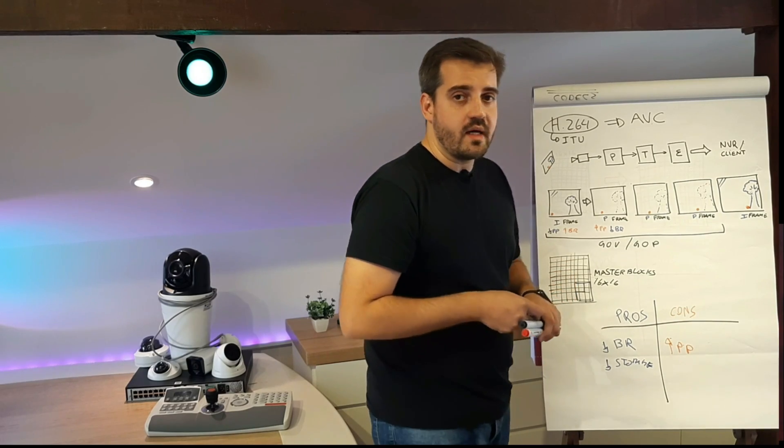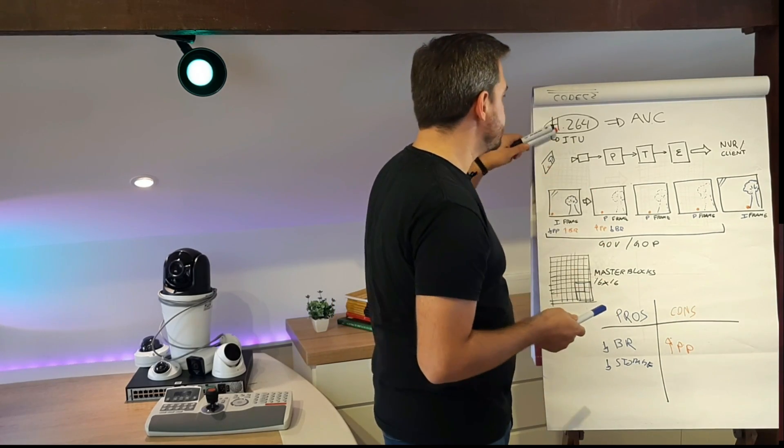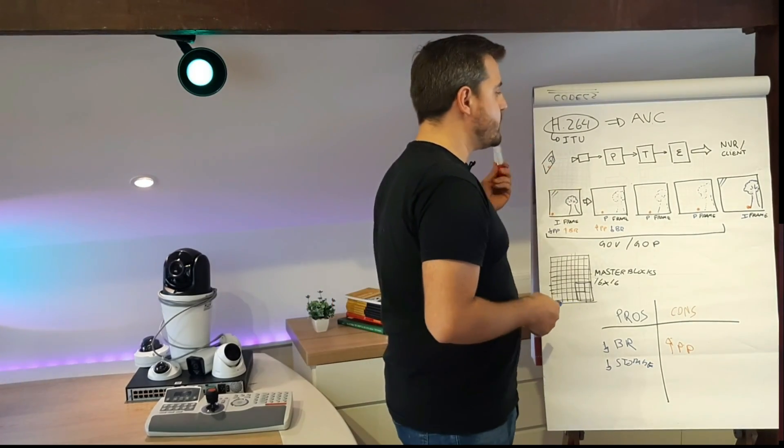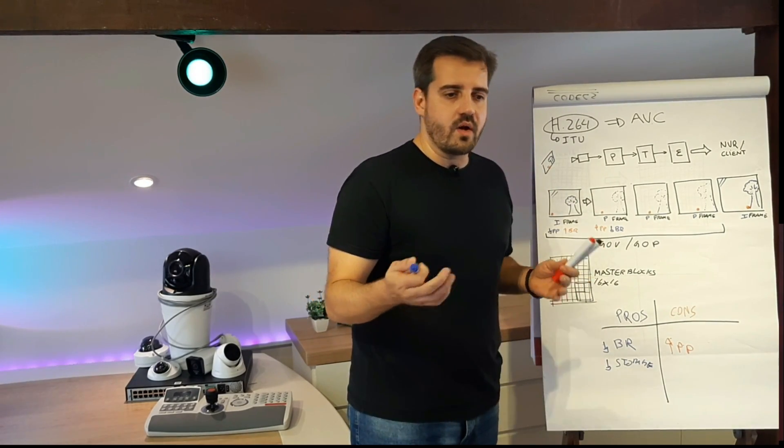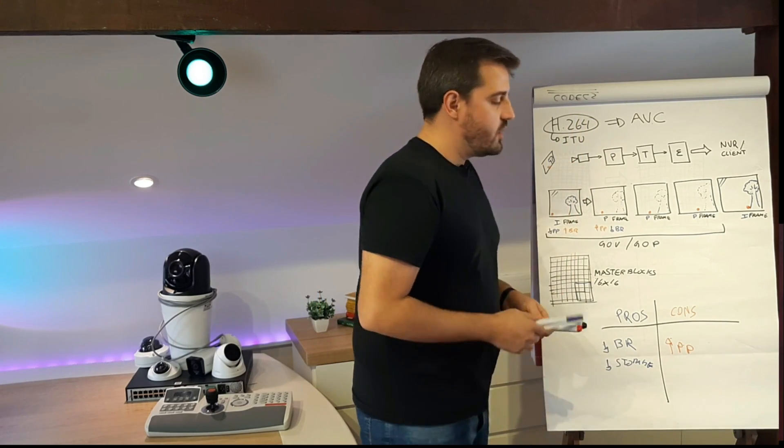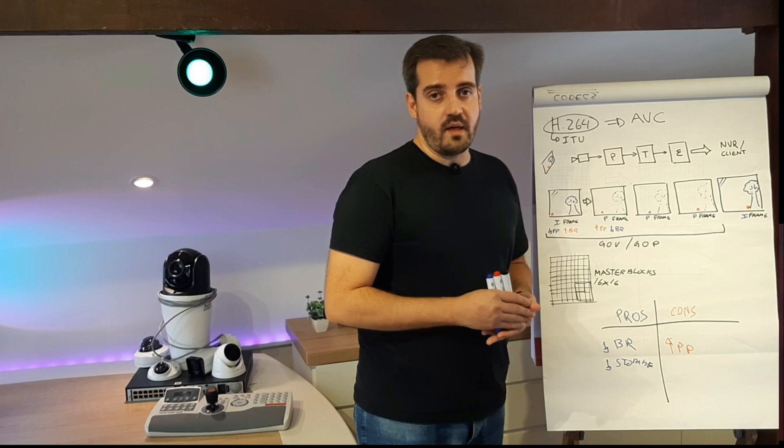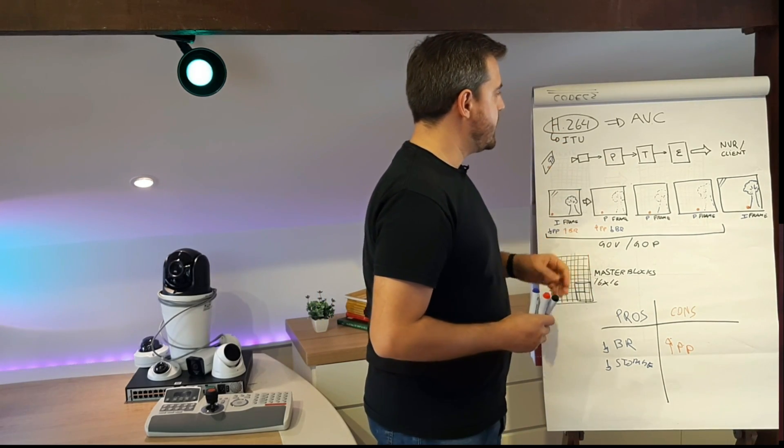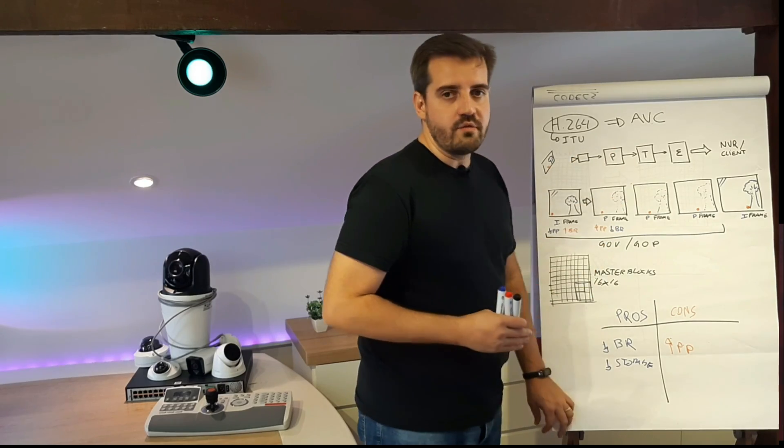We also have a new component here in the H.264 stream which is audio. In MJPEG we don't have audio enabled or embedded in the codec, but in H.264 we have the audio as well. It's an option that we can enable in the camera and it can be merged in the video stream to the NVR.